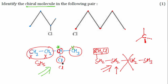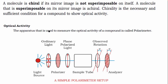Now let me give you a brief understanding of chirality. A molecule is chiral if its mirror image is not superimposable — that is the criteria. A molecule is chiral if its mirror image is not superimposable. If the mirror image is superimposable, then the molecule is achiral.